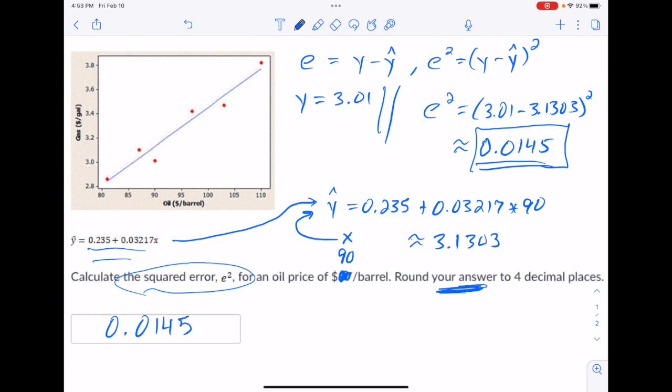When you do four decimal places, you are, by the way, counting all decimal places, or all digits after the decimal. So that 0 right there does count as one of your decimal places. So keep that in mind.